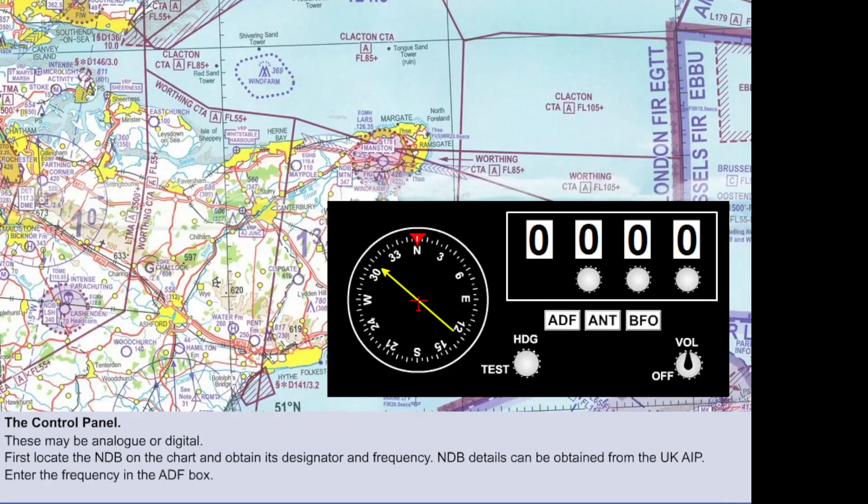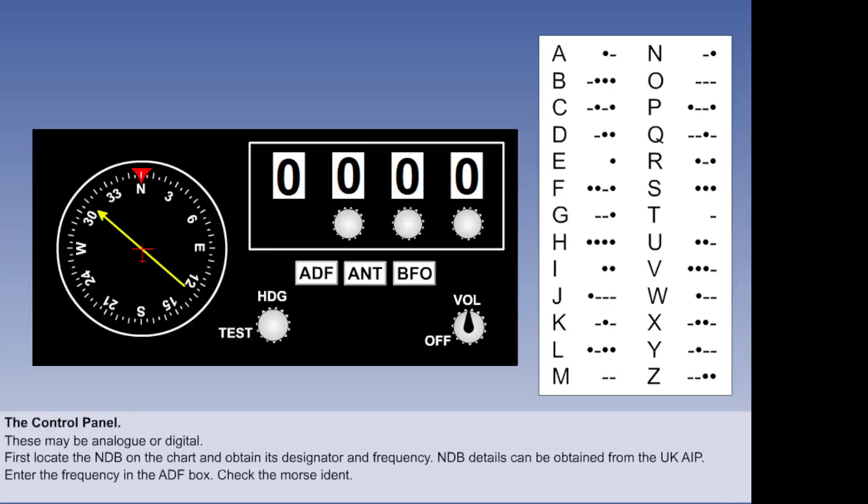More than likely, you will enter the NDB designator into your flight plan, which your autopilot will follow. But if you are selecting the NDB manually, you select the ADF button and enter the frequency. You must then check that you have selected the correct NDB by listening to the Morse identifier. Aviation charts contain the Morse alphabet.